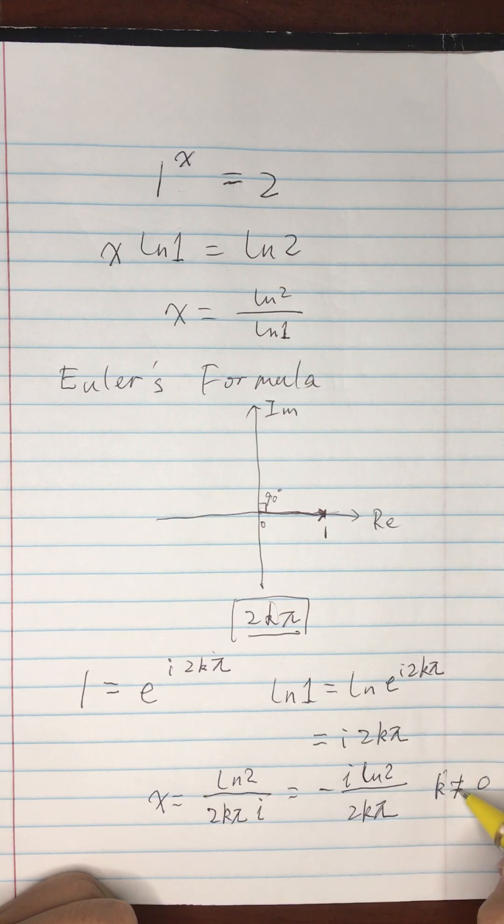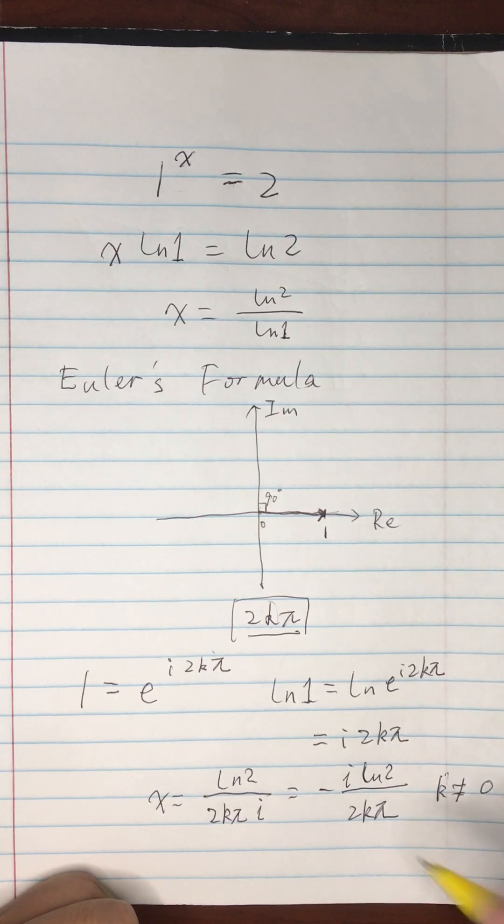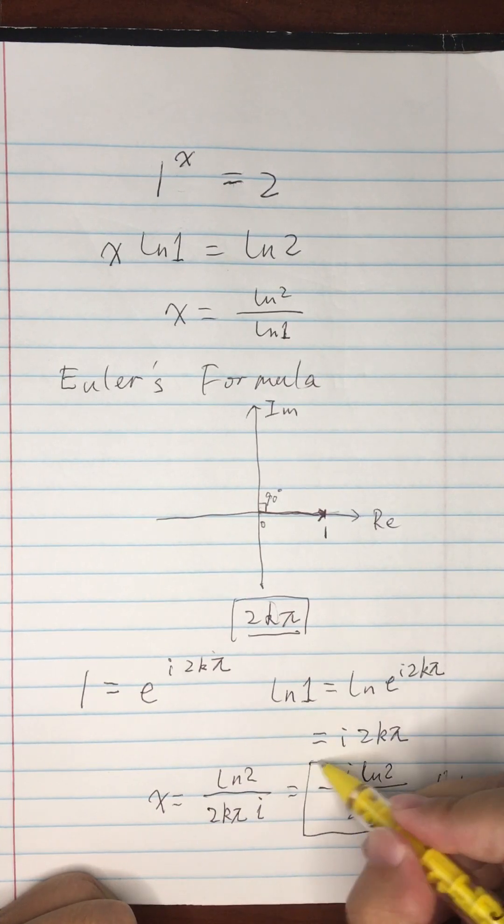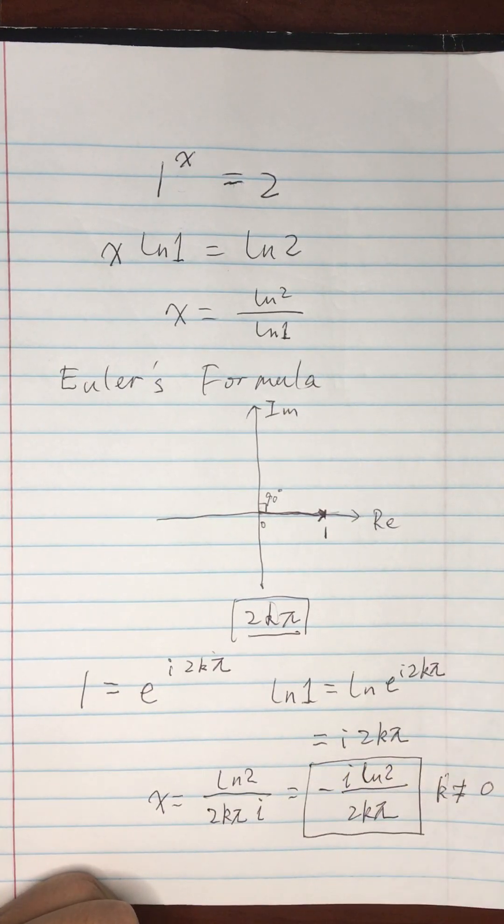If k equals 0 then we still don't have a solution. So as long as k is an integer that's not 0, then we have a solution, and our solution is this complex number.